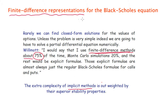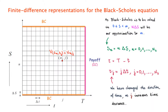In order to find this finite difference representation, the first thing we need to do is define a mesh. Since it is a two-dimensional equation, the variables we have are time and the asset price on the S-axis. We have to discretize the S-axis, defining a minimum S-value — usually zero — and a maximum value S-max.